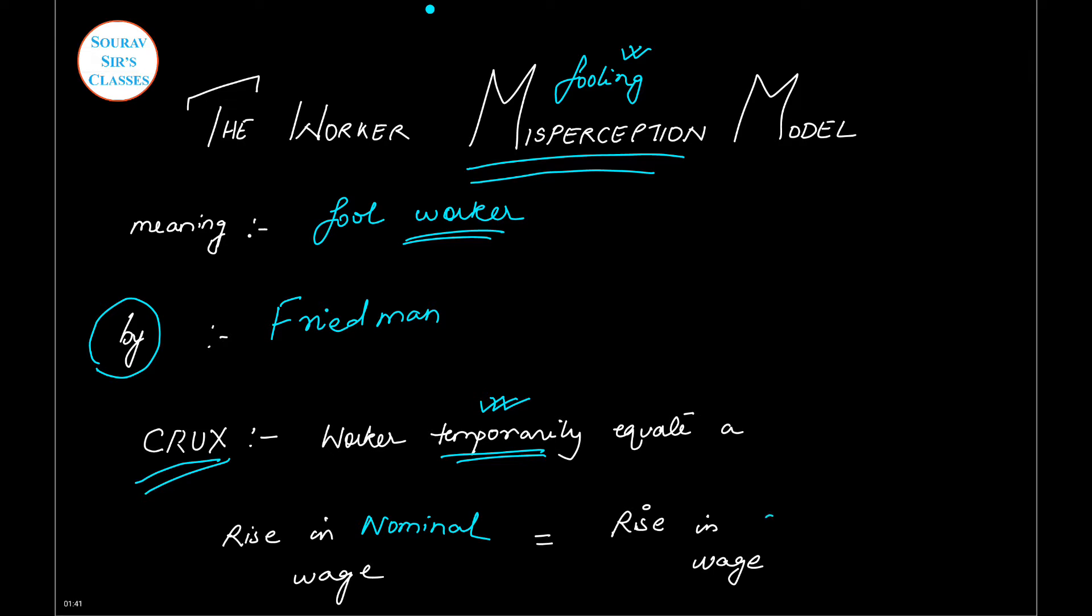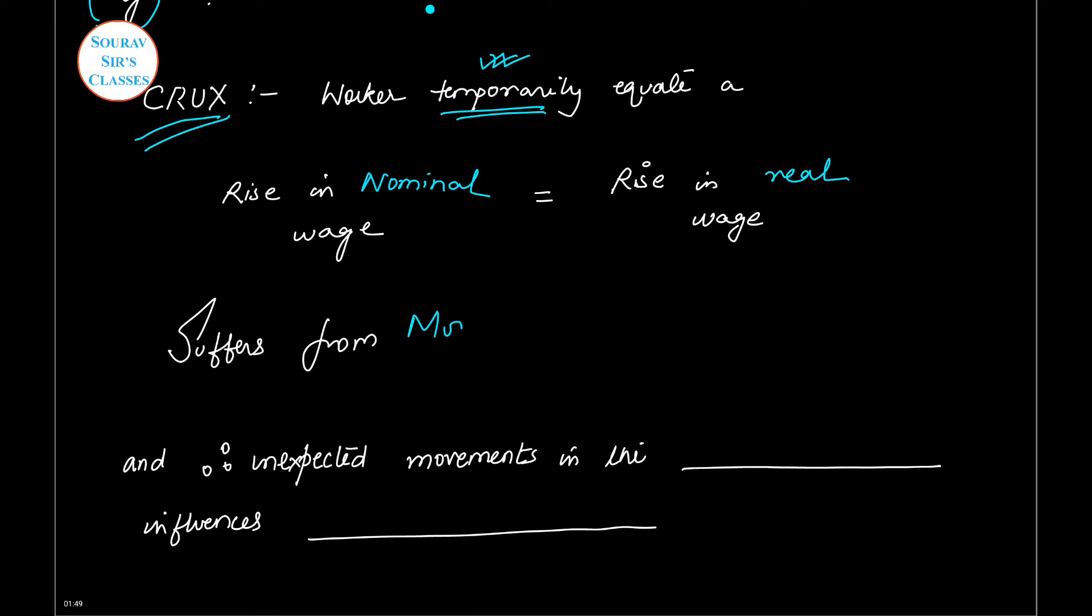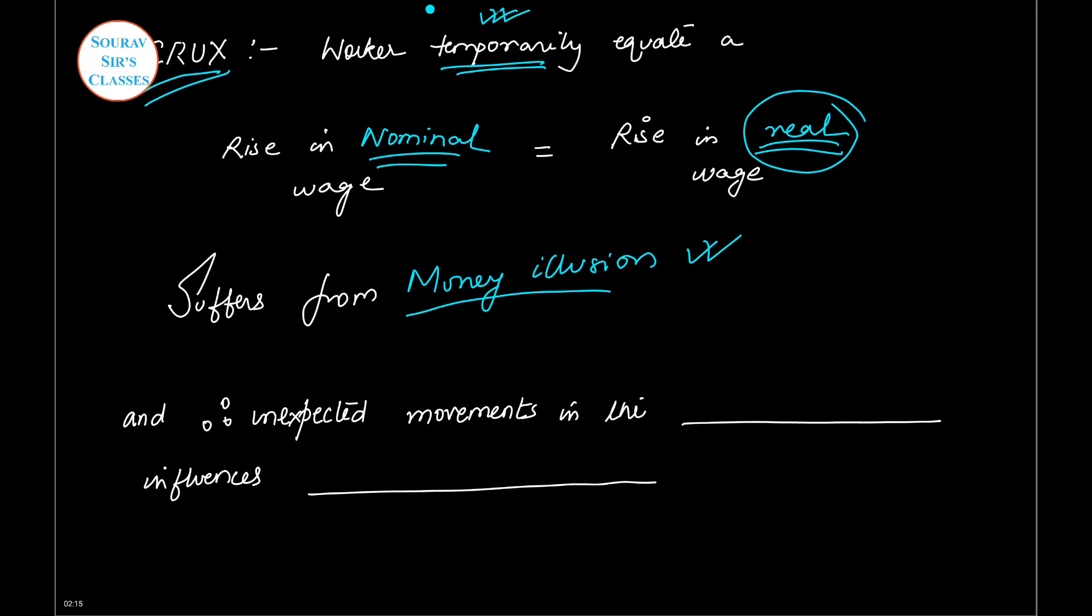He will equate rise in nominal wage with rise in real wage. And when anyone does that, he will suffer from money illusion. Illusion means magic, so there is money illusion. Your nominal wage is rising and in real terms there is no improvement, but you are actually equating it or considering it to be an improvement in real wage. That's why it is the Worker Misperception Model.